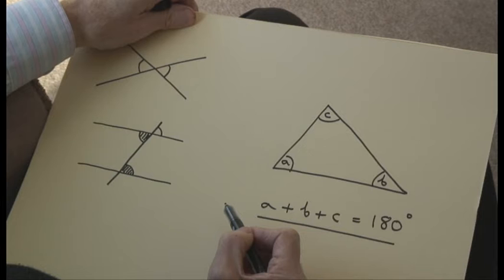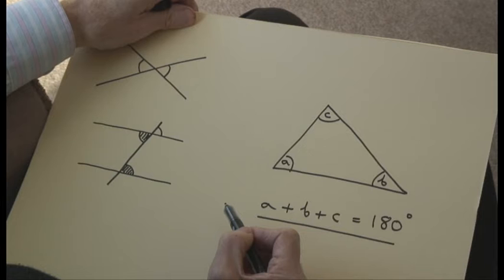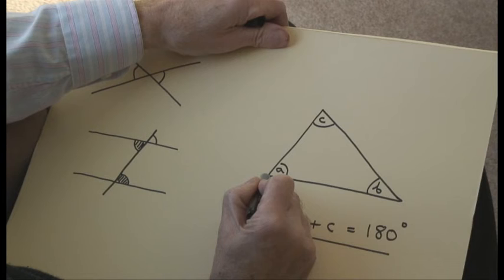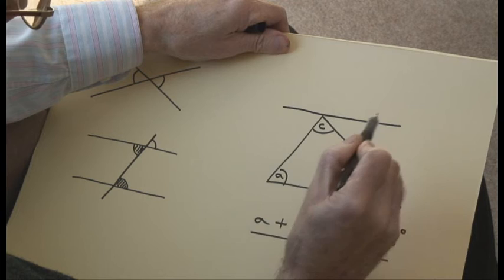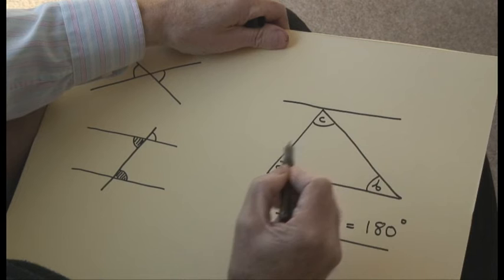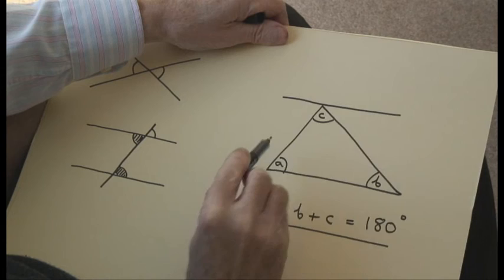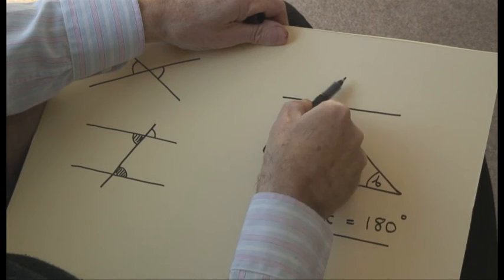And yet I can prove that using this idea of alternate angles in one line, literally one line actually, because I'm going to draw in a line parallel to this one through this top point of the triangle here. So this line here is constructed parallel to this one here. And the reason I've done that is that this angle here is the same as this angle here, because these two angles, that one and this one, are alternate angles.